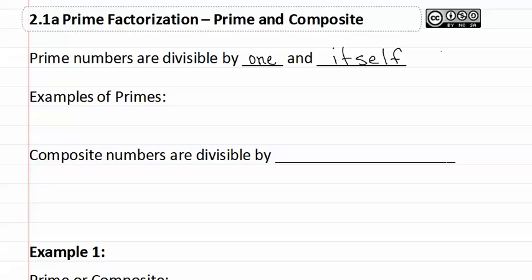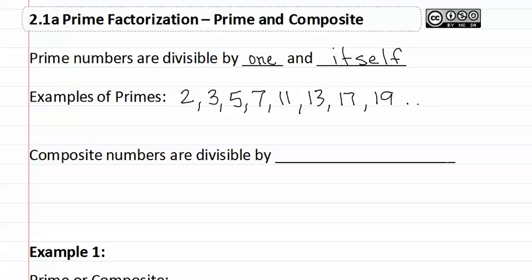Some examples of prime numbers are numbers such as 2, 3, 5, 7, 11, 13, 17, and 19. This list continues on indefinitely. All of these numbers can only be divided by one and themselves.